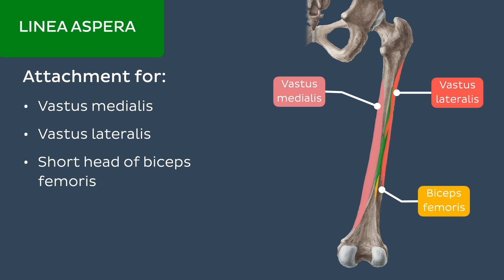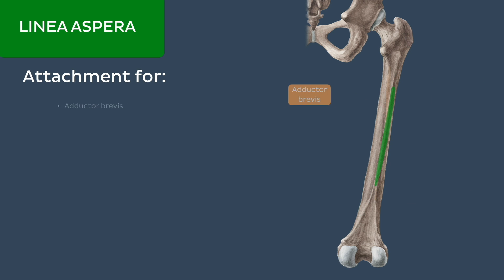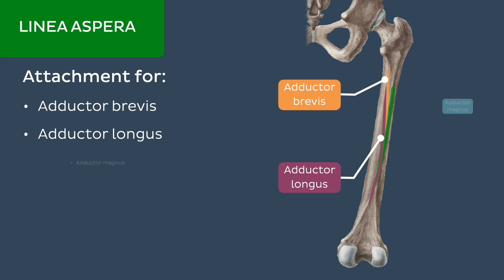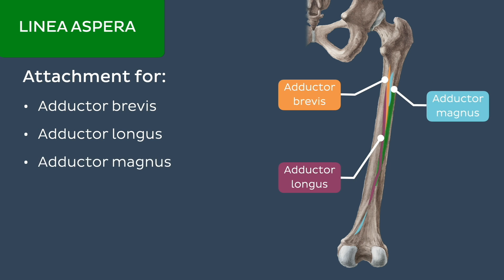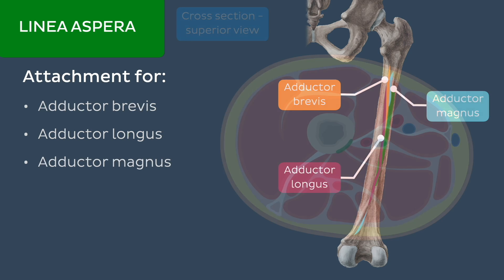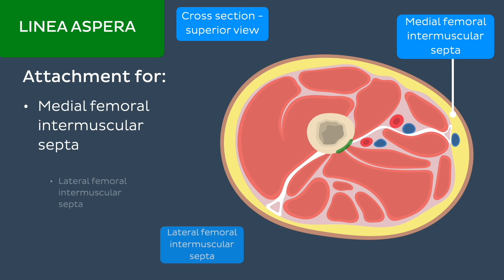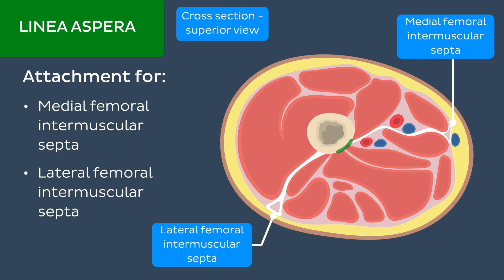It is also an insertion or distal attachment for the adductor brevis, longus, and magnus muscles, and finally acts as an attachment site for both the medial and lateral femoral intermuscular septa.